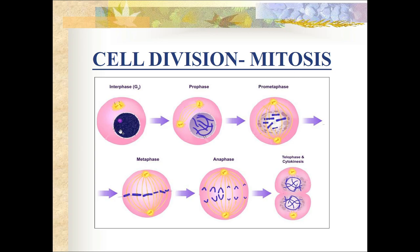Summarizing mitosis: interphase is the preparatory phase between two successive cell divisions. In prophase, chromosomes become thick and shorter and the centrosome divides to form two centrioles that move to the poles. In metaphase, chromosomes arrange on the equatorial plate; then the centromere attaches to spindle fibers and the chromatids are pulled towards the poles, followed by telophase and cytokinesis.